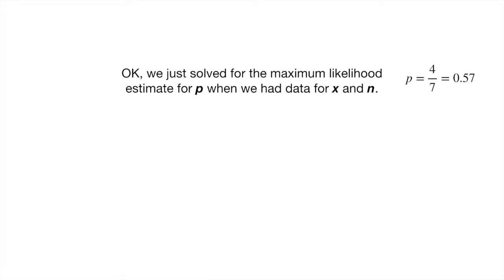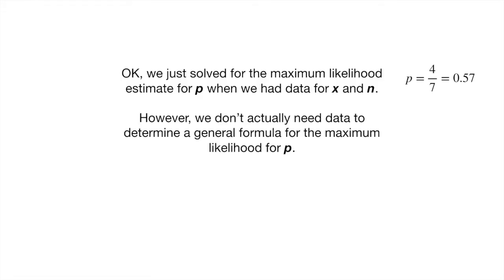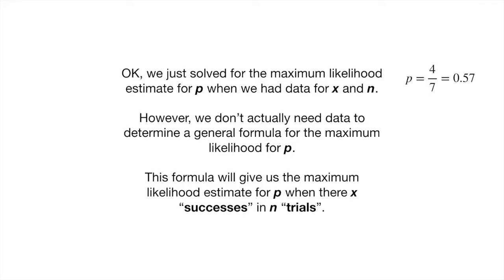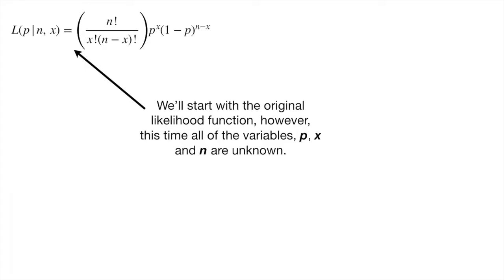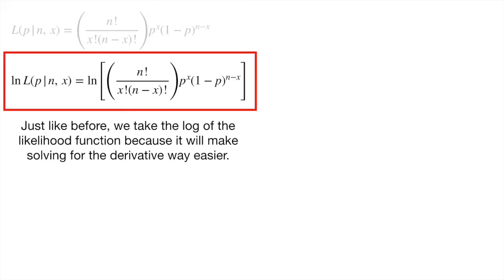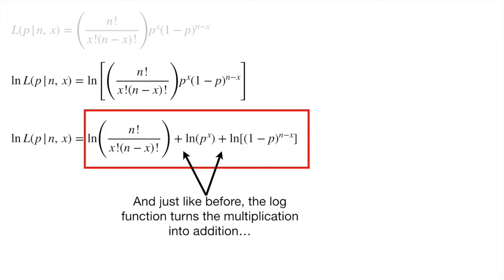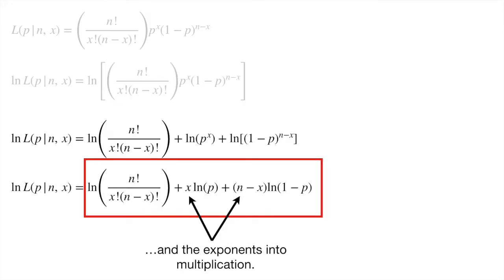We just solved for the maximum likelihood estimate for p when we have data for x and n. However, we don't actually need specific data to determine a general formula for the maximum likelihood for p. This formula will give us the maximum likelihood estimate for p when there are x successes in n trials. We'll start with the original likelihood function, but this time all of the variables — p, x, and n — are unknown. Just like before, we take the log of the likelihood function to make solving for the derivative much easier. The log function turns the multiplication into addition, and the exponents into multiplication.